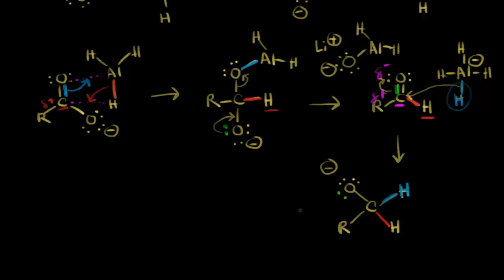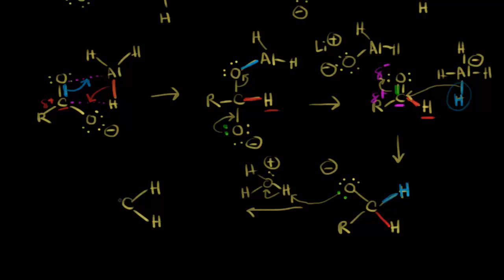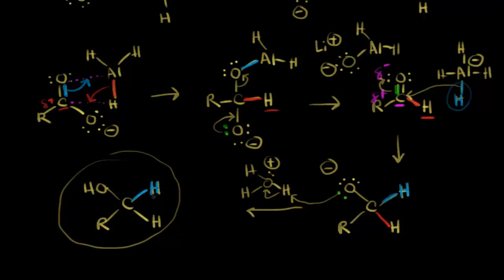The final step: we would just protonate our alkoxide. We add something like dilute acid H3O+ in our workup, and our alkoxide picks up a proton, leaving those electrons behind. Protonating our alkoxide yields our alcohol as the product — we have those two hydrogens, an OH, and our R group. That's one of the possibilities for the reduction of a carboxylic acid with lithium aluminum hydride, with the end result of transferring two hydrides from LiAlH4. The mechanism is definitely more complicated than what I showed you, but this is a simple way to think about it.